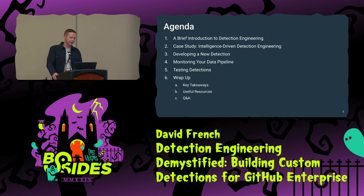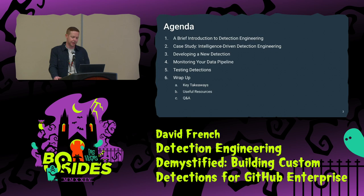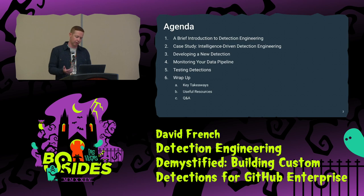Here's a brief overview of what I'll be covering today. For those of you new to detection engineering, I'll start by explaining what it is and some of its benefits. Then we'll look at some threat intel that provides details on an attack group's tactics for stealing data from GitHub environments. Then we'll move on to develop a detection that identifies a specific behavior — identifying data sources, simulating the behavior we want to detect, and developing our detection logic. We'll also look at monitoring your data pipeline and testing your detections, stuff that's really important but often neglected. And I'll leave you with key takeaways and links to resources.